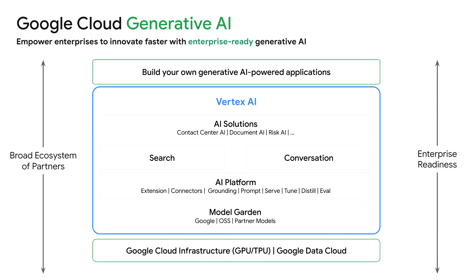This year, we've extended the capabilities of our AI platform, which has traditionally been known as Vertex. For training and hosting models, we now have tuning, distilling, and evaluating your models. We also have extensions and connectors. And we'll come back to grounding later on. A lot of these are new announcements this week, and I encourage you to join the breakout sessions that are going to dive into each of these in detail.